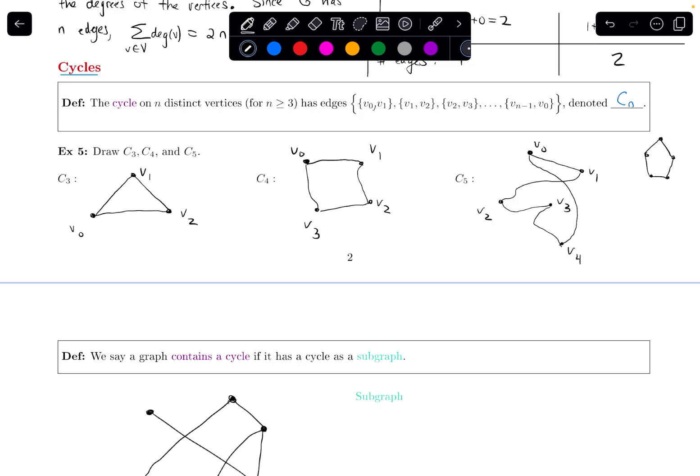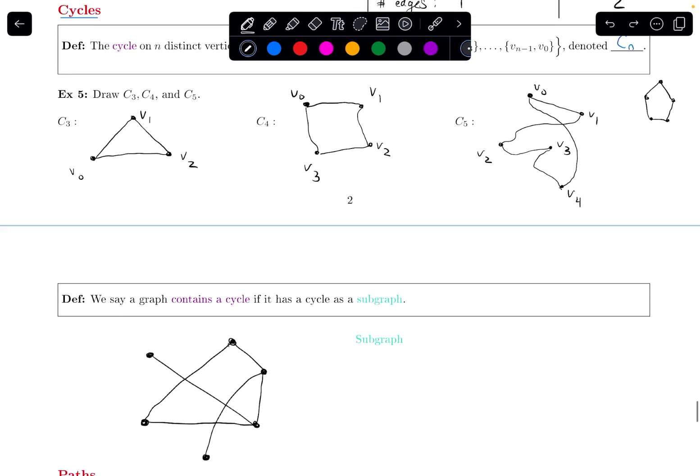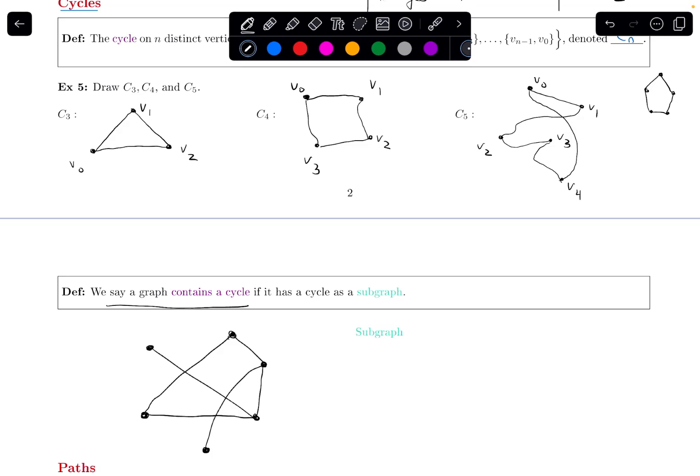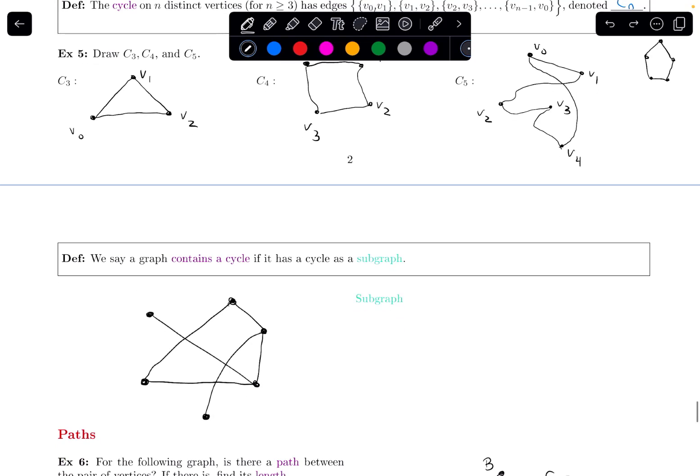Try to convince yourself of that, that if you drag some of these vertices around and bend the edges that go with them, it'll actually make the same shape as this. We say that a graph contains a cycle if it has a cycle as a subgraph.